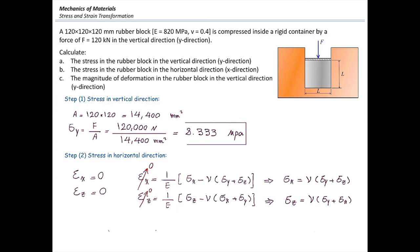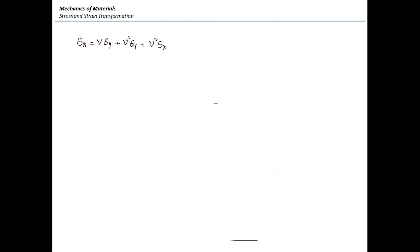Now I'm going to combine these two equations. I'm going to plug sigma z from the second equation to the first equation. Sigma x is nu multiplied by sigma y plus sigma z is nu multiplied by sigma y plus sigma x, right? Now I can solve it for sigma x. Sigma x is going to be equal to nu sigma y plus nu squared sigma y plus nu squared sigma x.